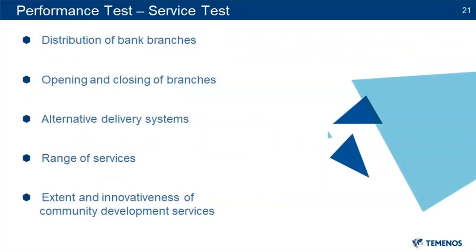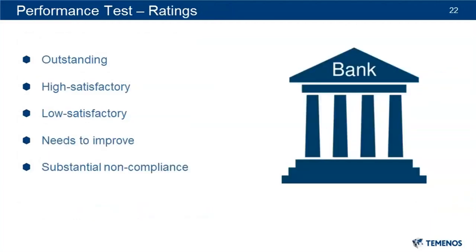The third test is the service test, which encompasses the distribution of branches within low to moderate income geographies, branches opened or closed in those geographies, and any alternative delivery systems such as LPOs, ATMs, online banking, bank at work, mobile banking, bank by mail. The range of services and products available to low to moderate income individuals and within low to moderate income geographies, and the extent and innovativeness of the community development services are also evaluated. Once the exam is completed, a rating will be assigned to your institution. Those ratings are outstanding, high satisfactory, low satisfactory, needs to improve, or substantial non-compliance.